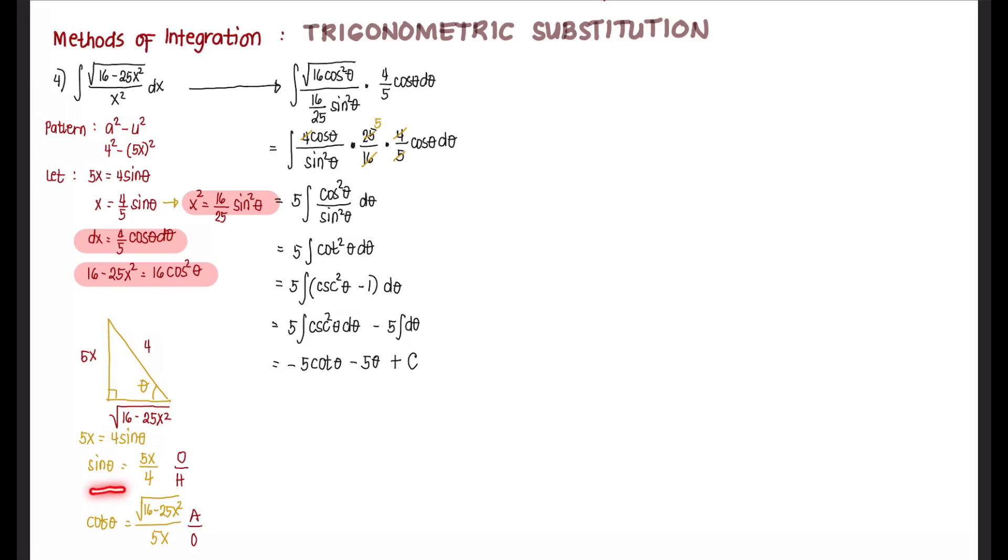Also, if sine theta equals 5x over 4, then using that, theta is equal to the arc sine of 5x over 4. We can now substitute this to our answer.